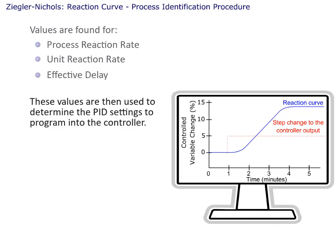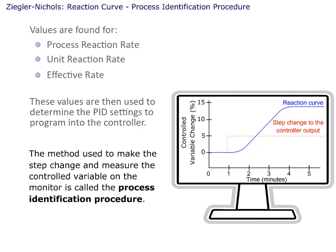These values are then used to determine the PID settings to program into the controller. The method used to make the step change and measure the controlled variable on the monitor is called the process identification procedure.